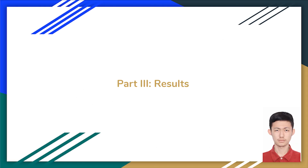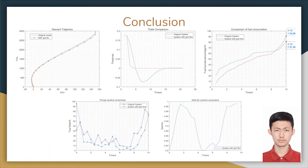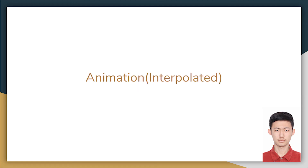I'm Sami. I will talk about the conclusion and the animation. Here are five figures of the comparison between the system with grid fins and without grid fins. Although for the first figure, the descent trajectory, they both have an S-shape which is quite similar, we can definitely tell differences based on other figures like the theta comparison, the fuel consumption, the thrust control command, and the grid fin control command. We can tell from the theta comparison figure that the system with grid fins stabilized theta faster without any oscillation, while the original system experienced an oscillation. With the extra lift provided by the grid fins, the new system tends to glide rather than landing directly, which saves around 8% of carried fuel, as illustrated in the third figure.